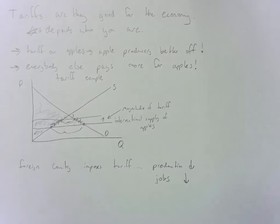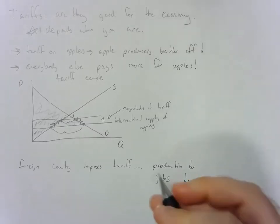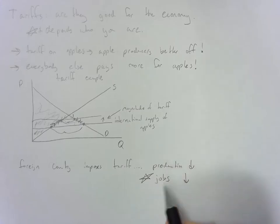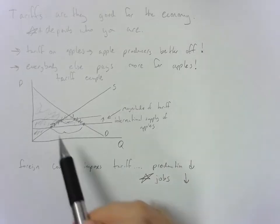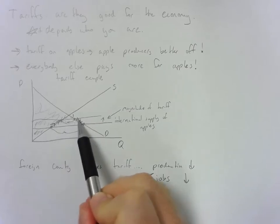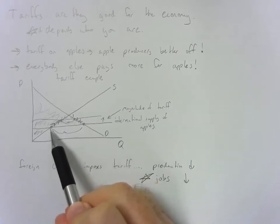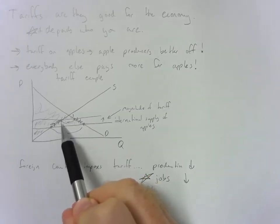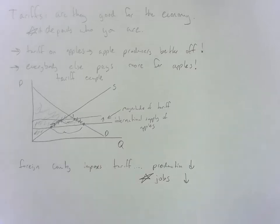And so this is why there is strong international cooperation to not put tariffs on selected goods, because there's this motivation to protect jobs and production in your own country. You can see that if you are importing a good, it would be very easy to increase the amount of jobs in your country by slapping a tariff on that good.